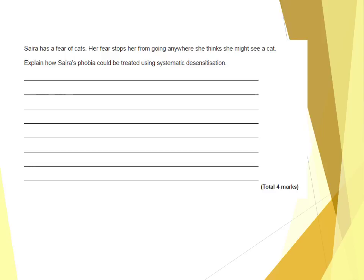So, having a fear of cats: firstly, the patient would be taught relaxation techniques such as muscle relaxation and breathing techniques that she can apply when she encounters items in the hierarchy. A hierarchy of fear needs to be drawn up, with clear examples relating to the phobia of cats. It could be looking at a picture of a cat, then a video of a cat, holding a toy cat, walking a street where cats are, being in the same room as a cat.